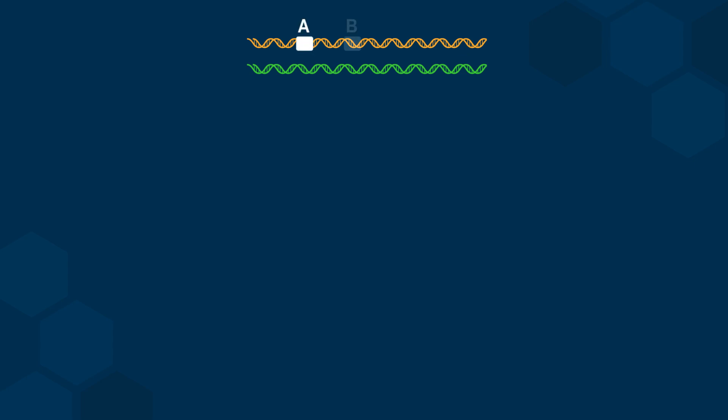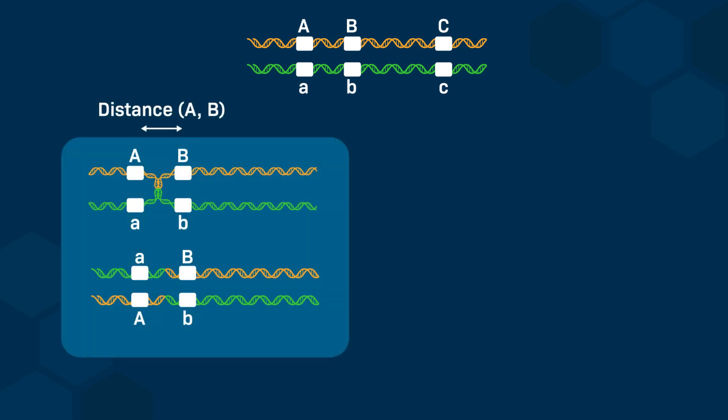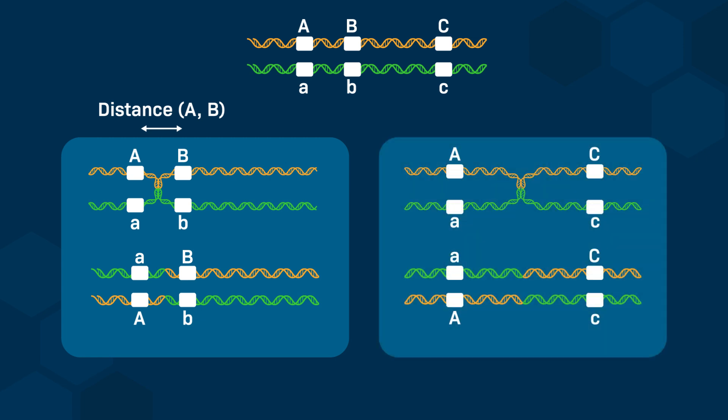Now let's look at the assortment of three different traits that are all found on the same chromosome. Here we have two homologous chromosomes, one in orange and one in green. The first chromosome carries the uppercase A, B, and C alleles, and the second chromosome carries the corresponding lowercase a, b, and c alleles. A crossover could take place, for example, between uppercase A and uppercase B, or between uppercase A and uppercase C.